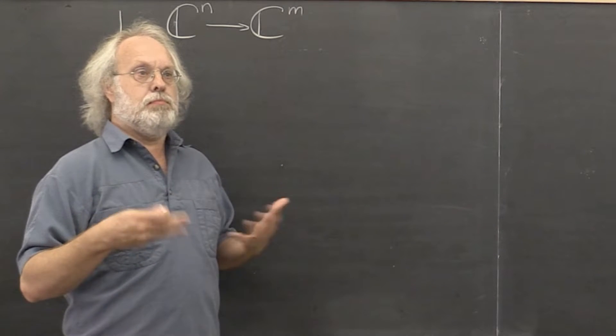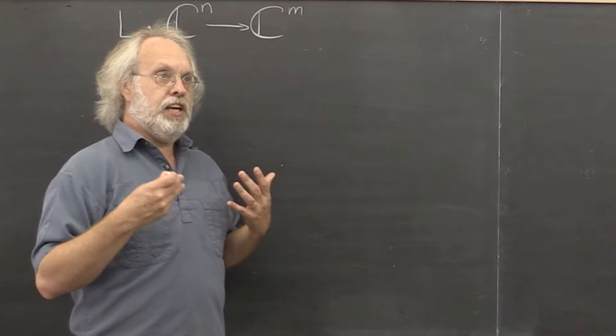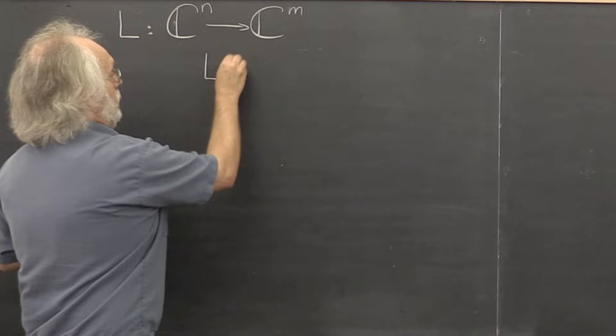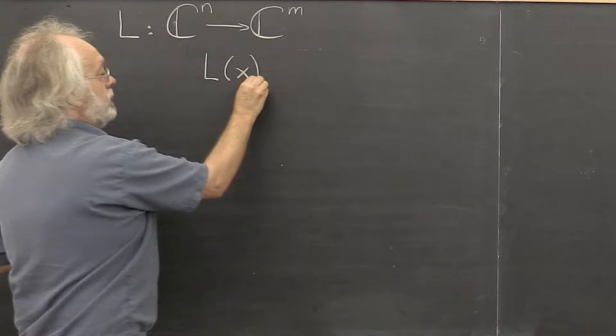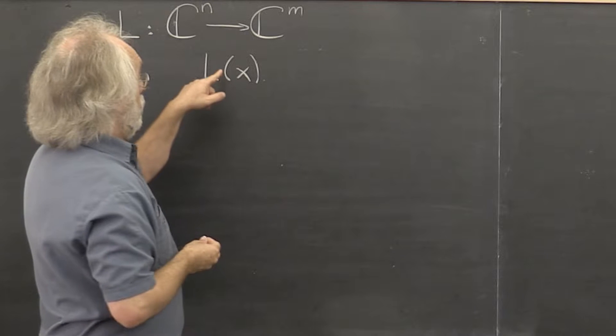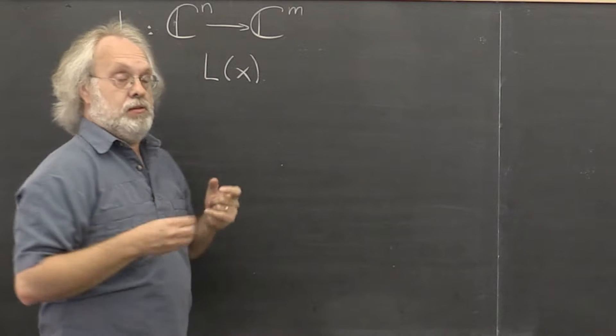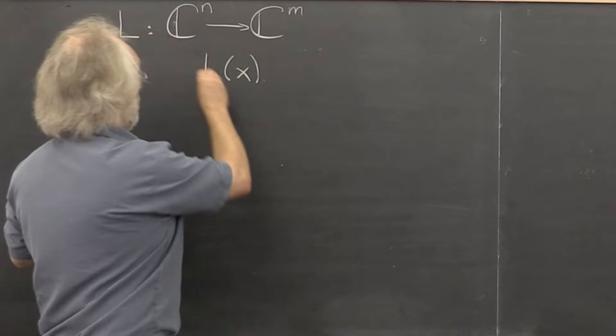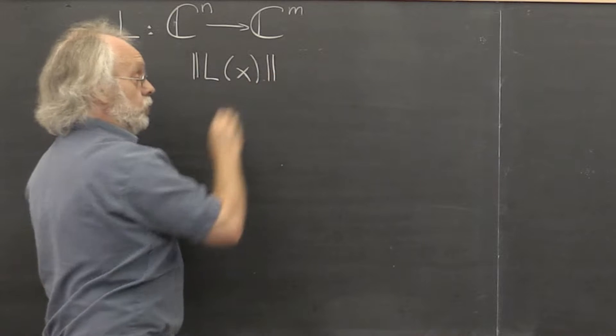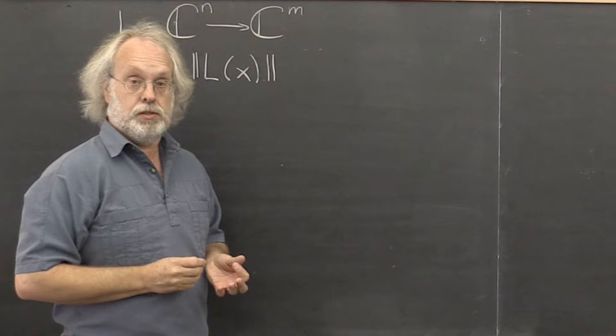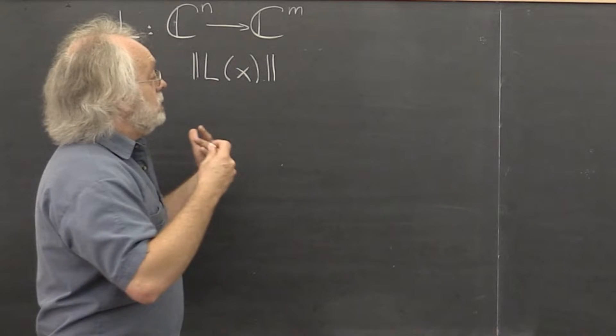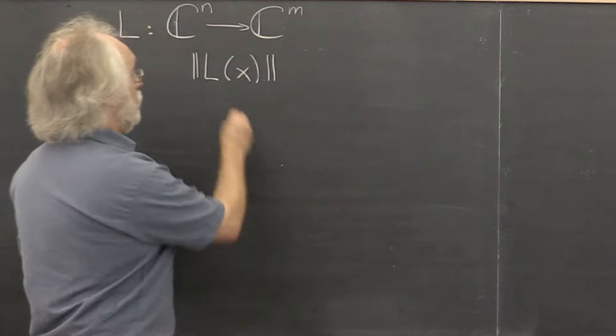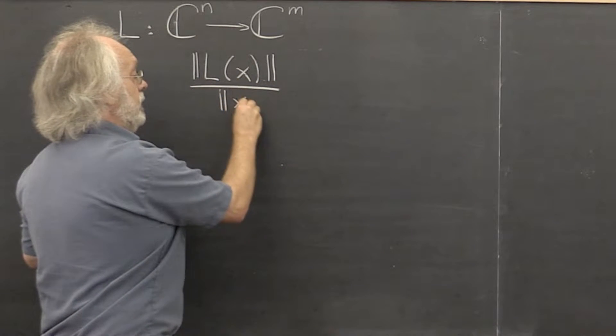How might we mathematically do that? Well, if we're given a vector, we might want to look at how that vector is transformed. And we've learned about vector norms. But we want to look at how much the vector is stretched relative to the input. So we would want to look at this ratio right here.